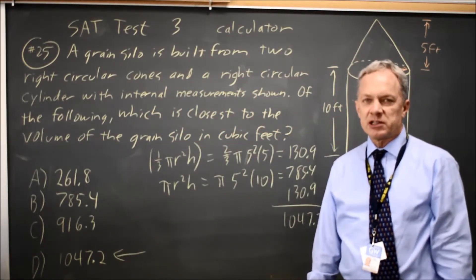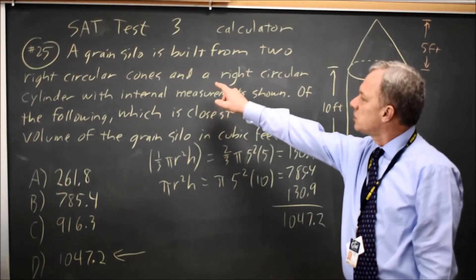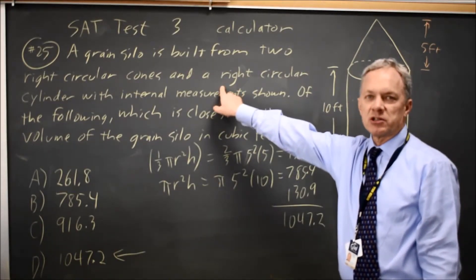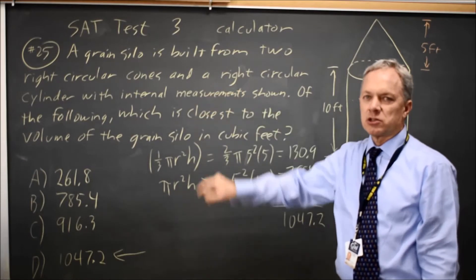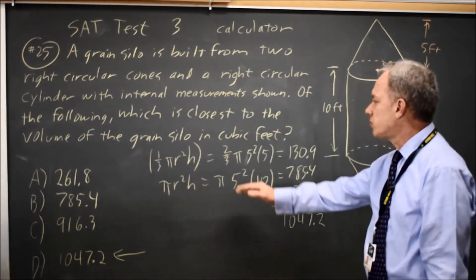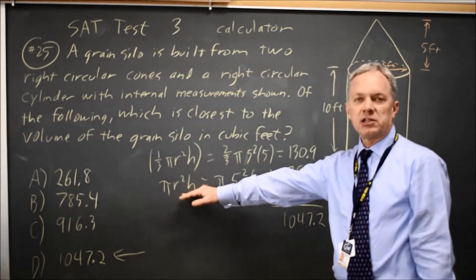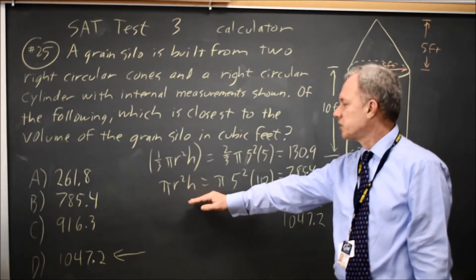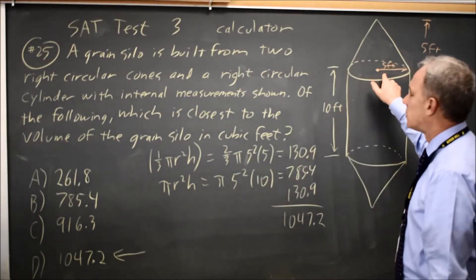The College Board will often ask you for the volume of a right circular cylinder. To do that, either you already know the formula, π r² h, or you can look it up in the front at the start of the section and apply that formula. Find r.